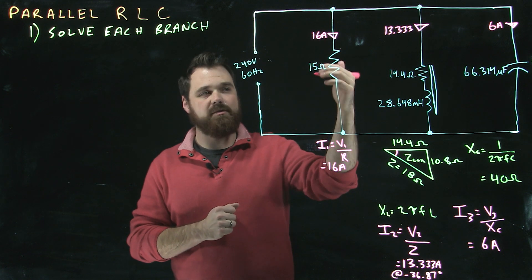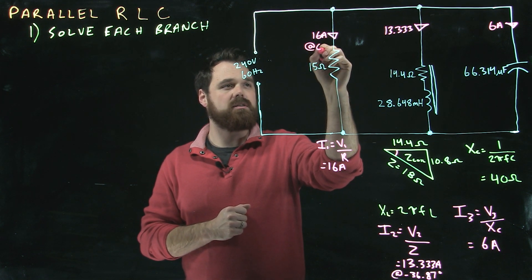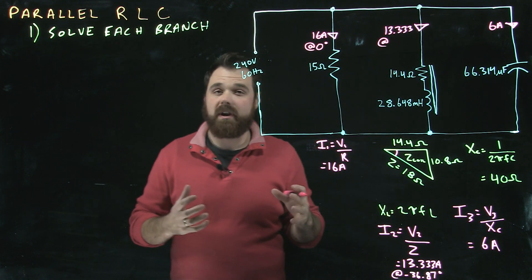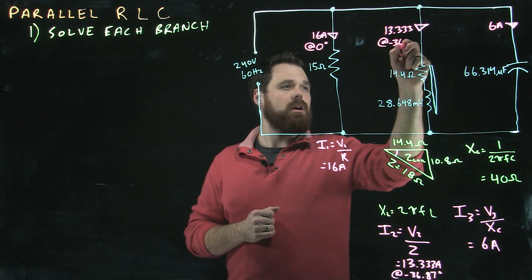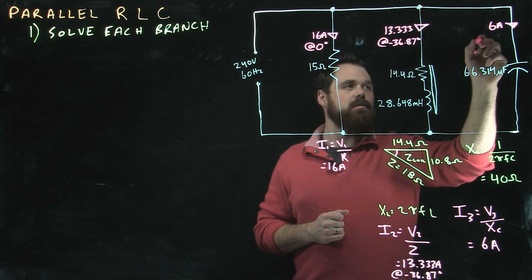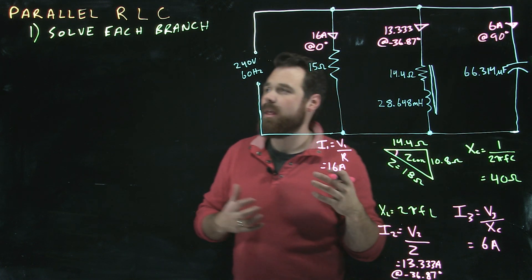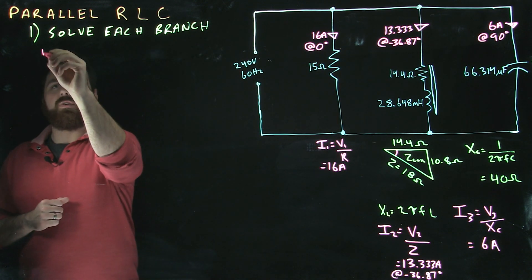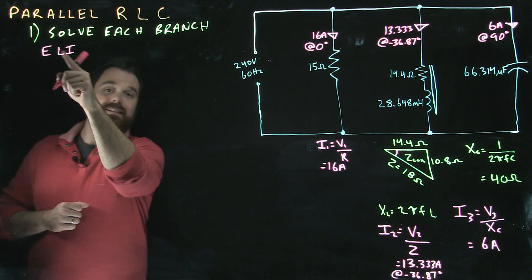Because our 16 amps is across a resistor, it's actually going to be in phase, meaning this is going to be at 0 degrees. We said that this was out of phase a little bit, at negative 36.87 degrees. And our 6 amps across our capacitor is going to be at 90 degrees. The reason we know it's at 90 and at a negative value is because in an inductive circuit, our current is lagging our voltage.